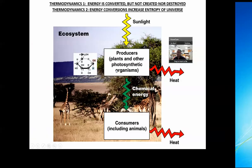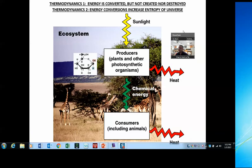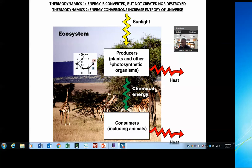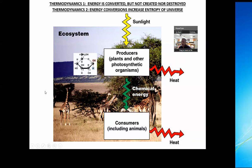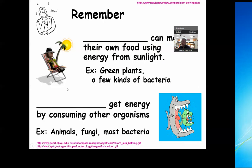Now let's start here. Pretty much the source of energy for life on the planet is sunlight. However, the source of energy for cells is ATP. So let's talk about how do you actually get there.